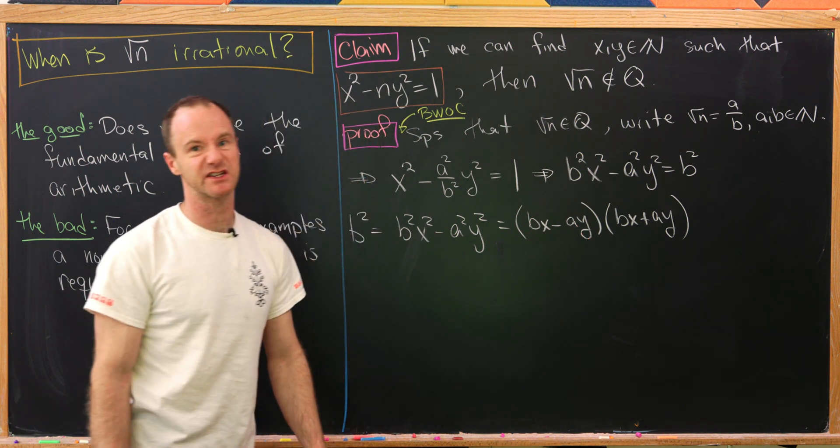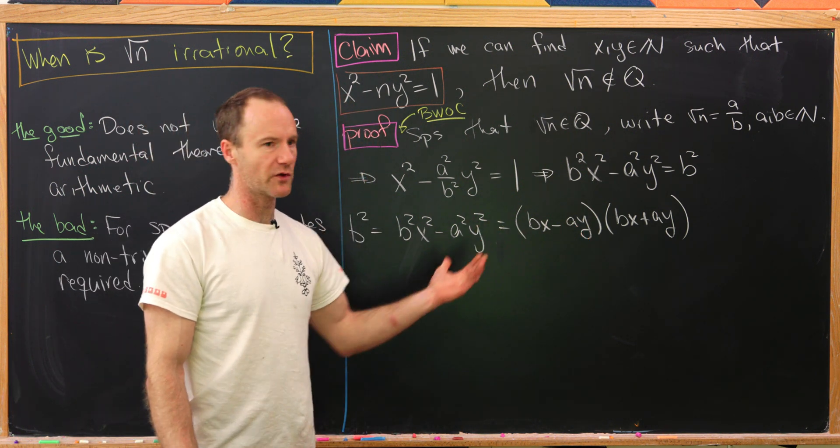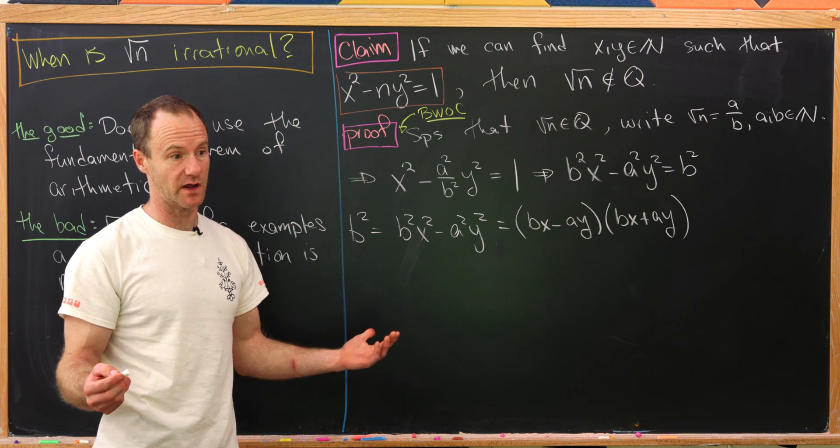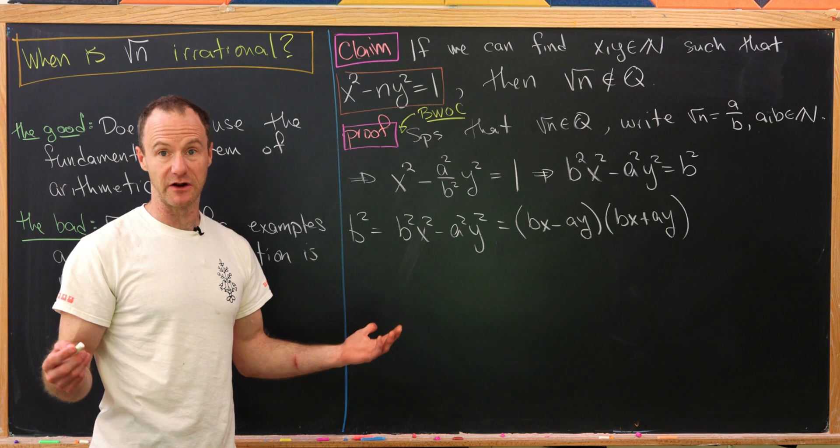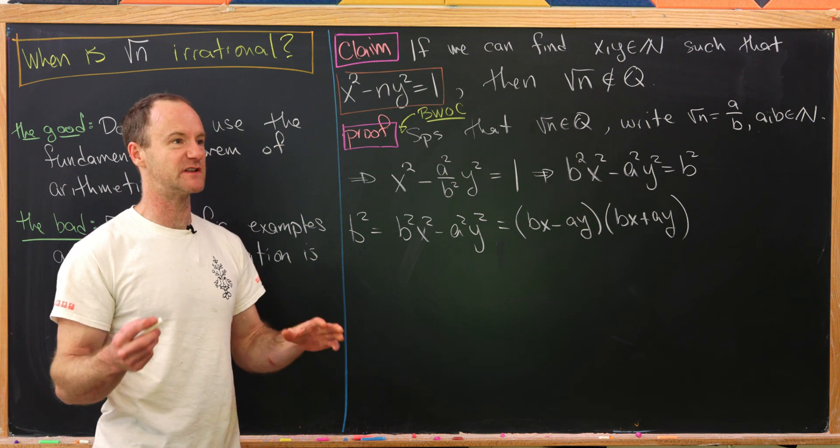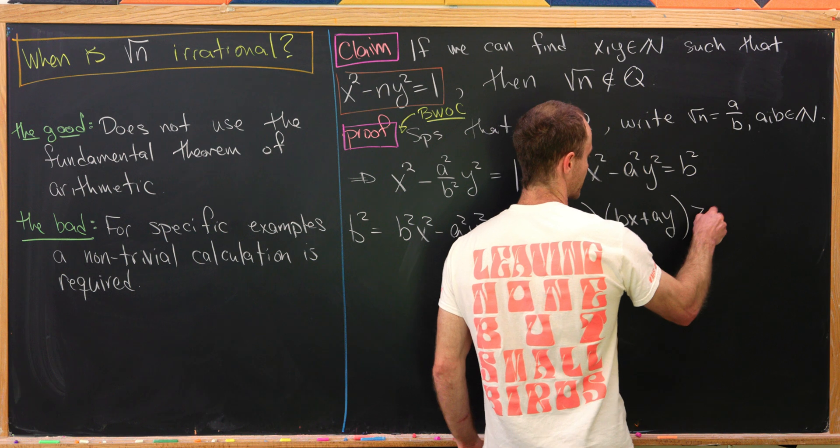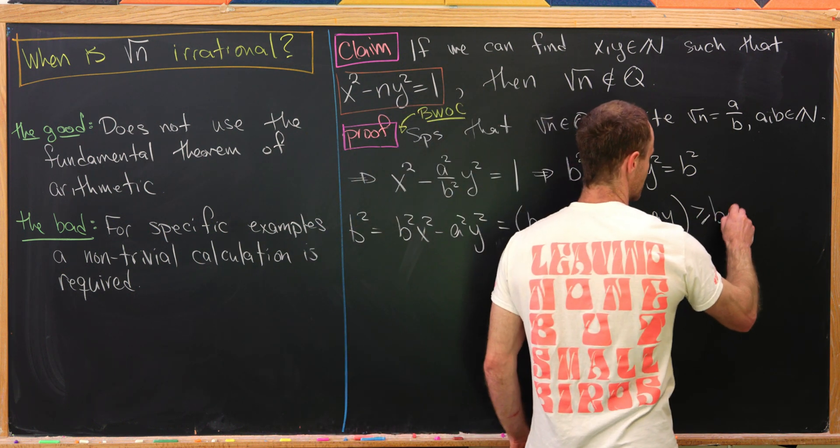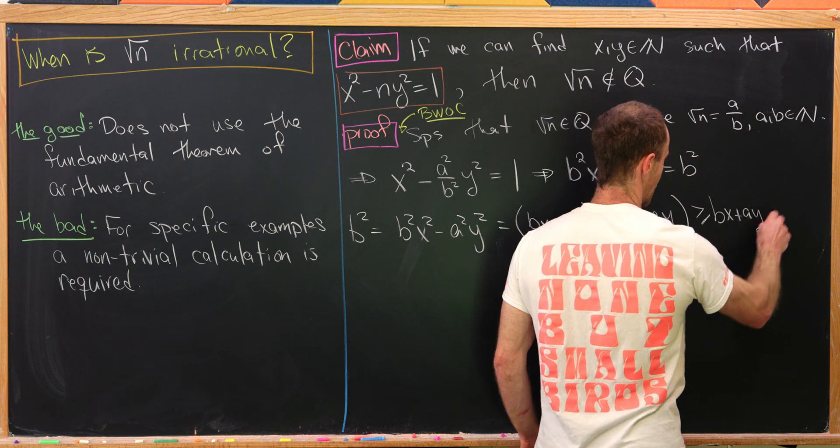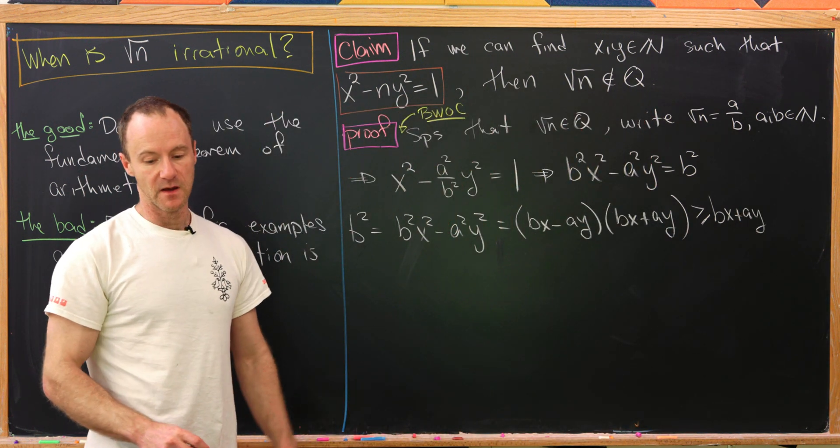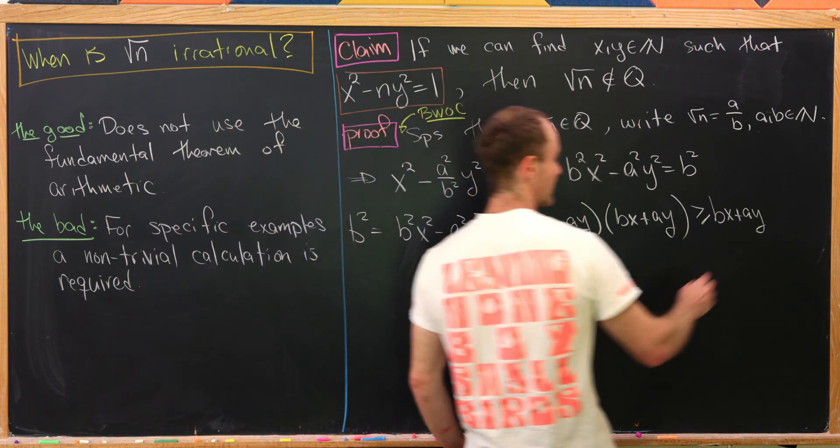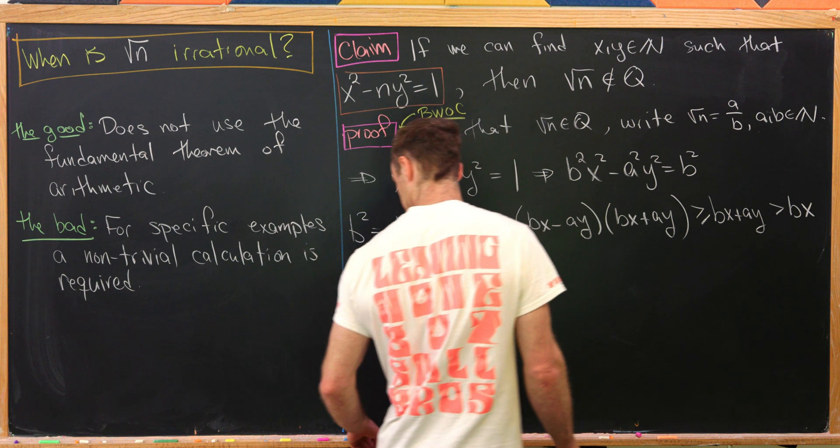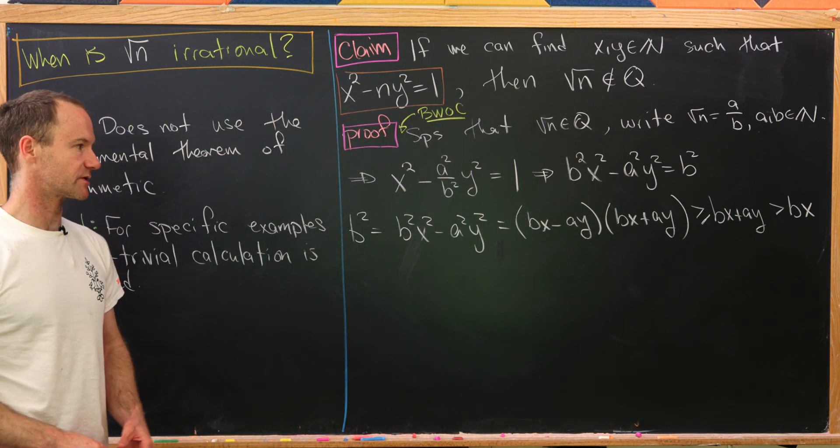That will create something smaller because we're multiplying by a positive term. That positive term could be equal to one, but most likely it's bigger than one. If it's bigger than or equal to one and we remove it, we end up with something smaller. So what we started with will be bigger than or equal to bx plus ay.